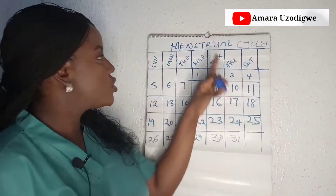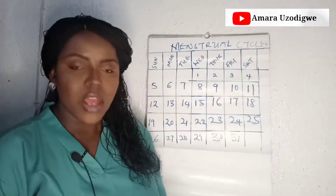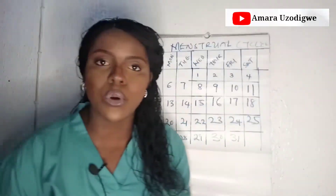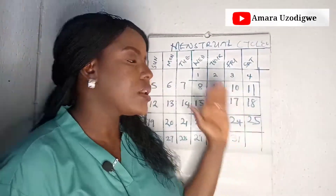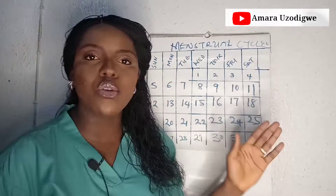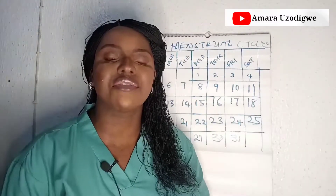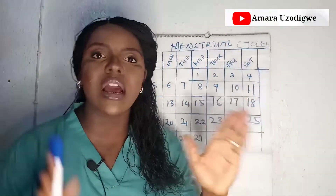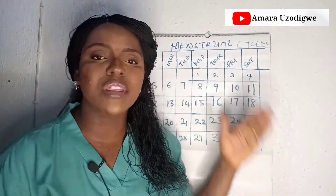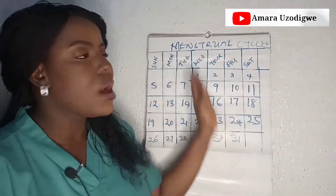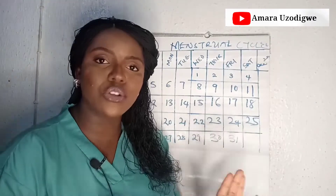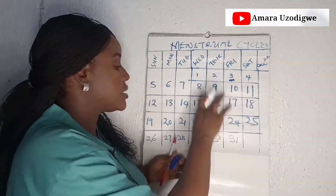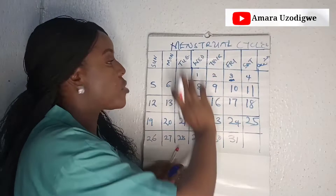So we're going to talk about the menstrual cycle. Get a book or a paper and create your own calendar — you can create it for six months. Use your pen and your biro to draw a calendar for that month and write the month there. Now here is the calculation — how to calculate your menstrual cycle.